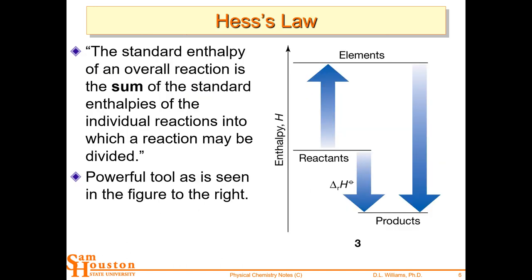Hess's law states that the standard enthalpy of an overall reaction is the sum of the standard enthalpies of the individual steps. You take the reactants apart to their elements, build the products from those elements, and the difference gives you delta H of reaction. We're taking the sum of the delta H of formation of products and subtracting the reactants.